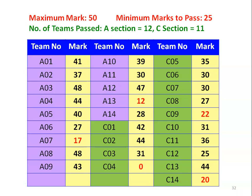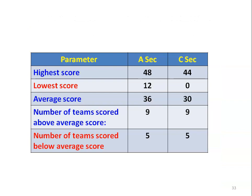The performance results: maximum mark was 50, minimum to pass was 25. A section: 12 out of 14 teams passed; C section: 11 out of 14 teams passed. Individual team scores for A section: 41, 37, 48, 44, 40, 27, 17, 48, 43, 39, 30, 47, 12, 28. C section scores: 42, 44, 31, 0 (unfortunately, that team performed very poorly), 35, 30, 30, 27, 22, 31, 36, 25, 44, 20. Analysis: highest score in A section was 48, C section 44; lowest score in A section was 12, C section 0. Average score: A section 36, C section 30. Nine teams in each section scored above average; five teams in each section scored below average.